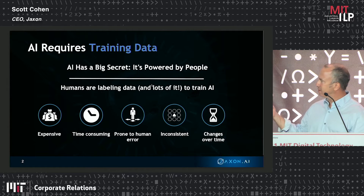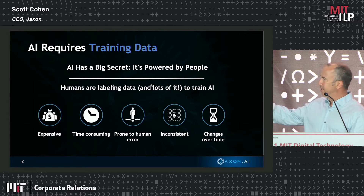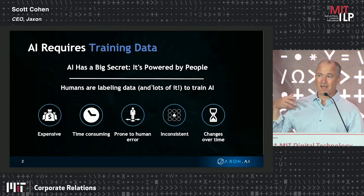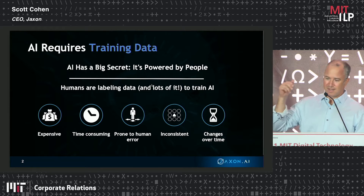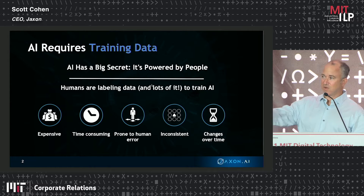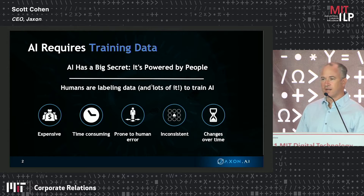And as many of the presentations have alluded to, it's not just a time and cost issue — it's also that humans make mistakes and bring inaccurate learning into the training pipeline, which then produces models that have an inherently flawed starting point.